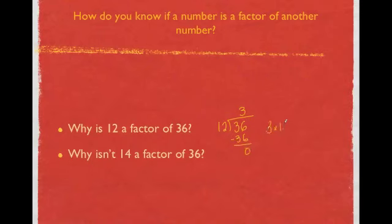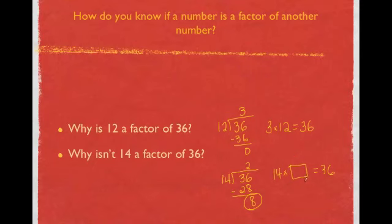So we know that 3 and 12 are both factors of 36 because they multiply to give you that. But why isn't 14 a factor of 36? If we divide 14 into 36, it'll go twice. And then when we subtract, we have a remainder of 8. So we know that 14 is not a factor of 36 because no other whole number times 14 will give me 36. To be a factor, it must be a whole number and there is not one.